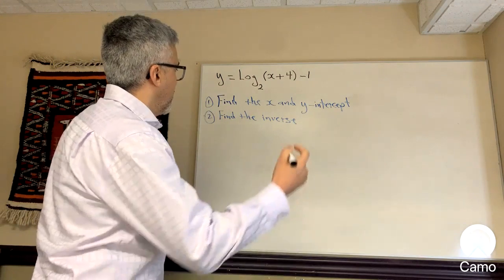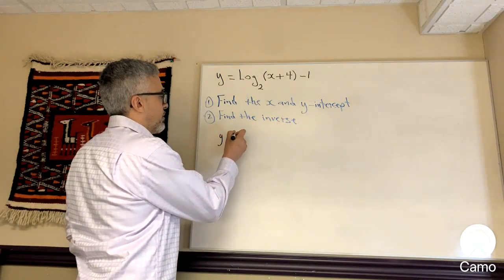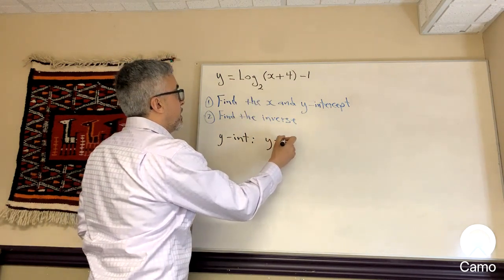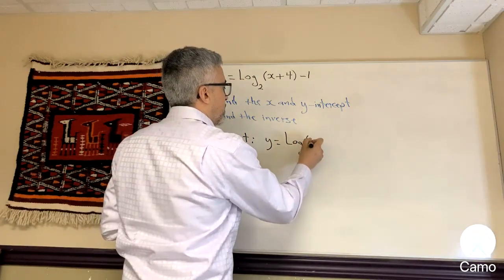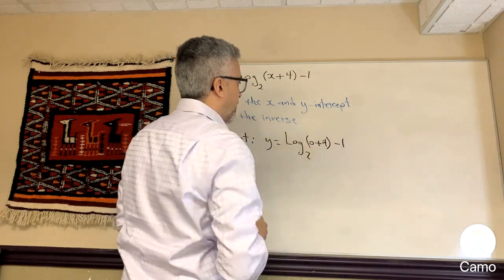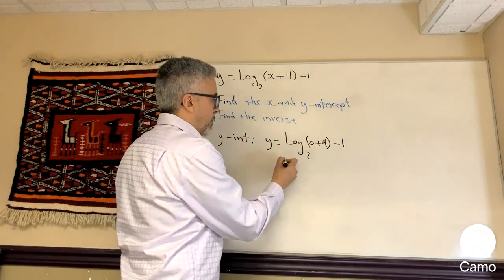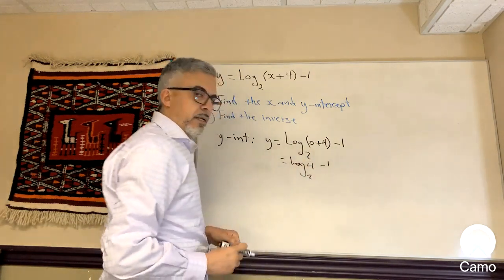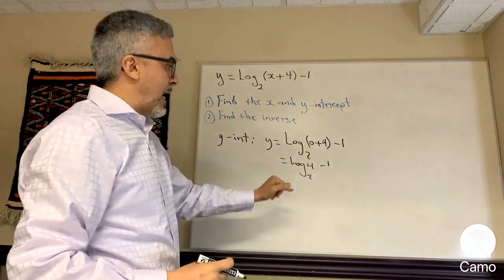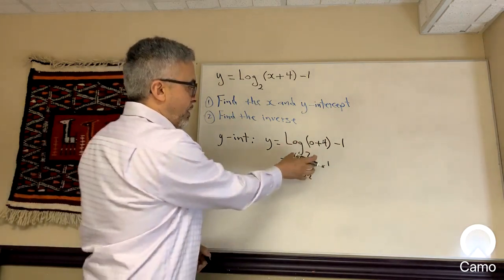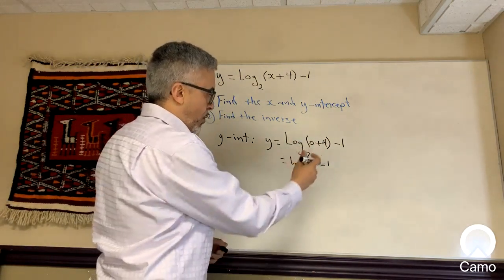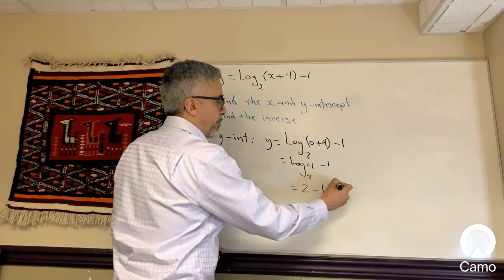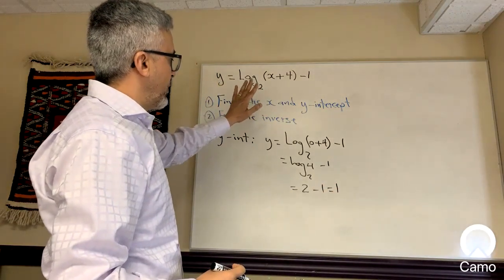So for the x and y-intercept, I'm going to find the y-intercept first. For the y-intercept, just make x equal to 0, so y equals log base 2 of (0 plus 4) minus 1. This becomes log base 2 of 4 minus 1. Log base 2 of 4 is asking: 2 to the power of what equals 4? The answer is 2. So log base 2 of 4 equals 2, and 2 minus 1 is 1. So the y-intercept is 1.